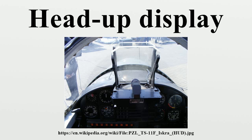A typical HUD contains three primary components: a projector unit, a combiner, and a video generation computer. The projection unit in a typical HUD is an optical collimator setup — a convex lens or concave mirror with a cathode ray tube, light-emitting diode, or liquid crystal display at its focus.